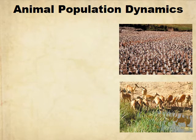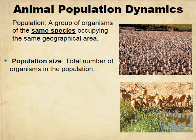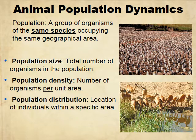With animal population dynamics, you have a population which is all the same species in the same geographic area. Size is the number of organisms. Your density is the number of organisms per unit area — so, five antelope per one square mile. And then you have your distribution, which is the location of individuals within a specific area.